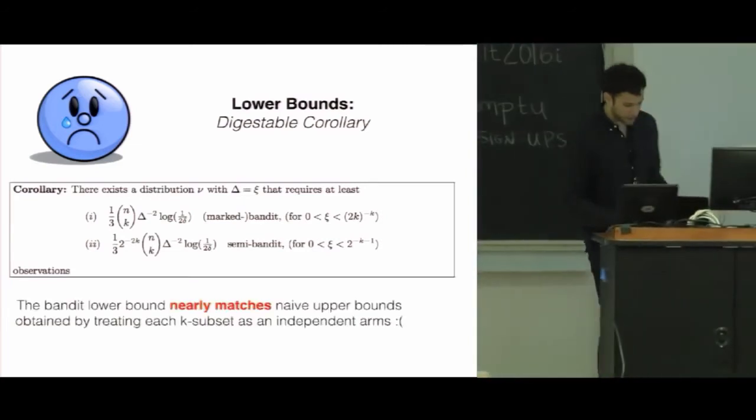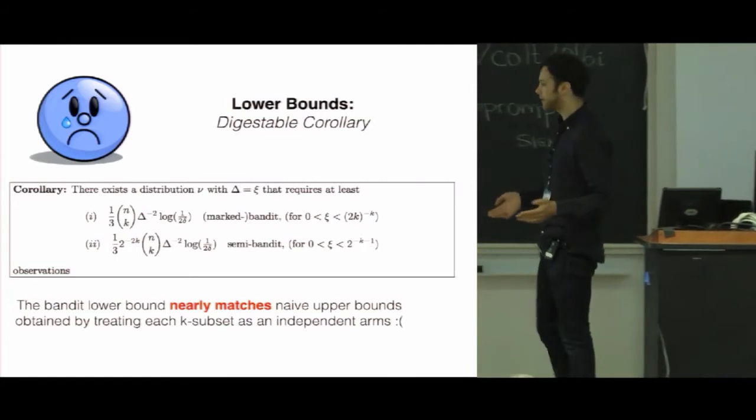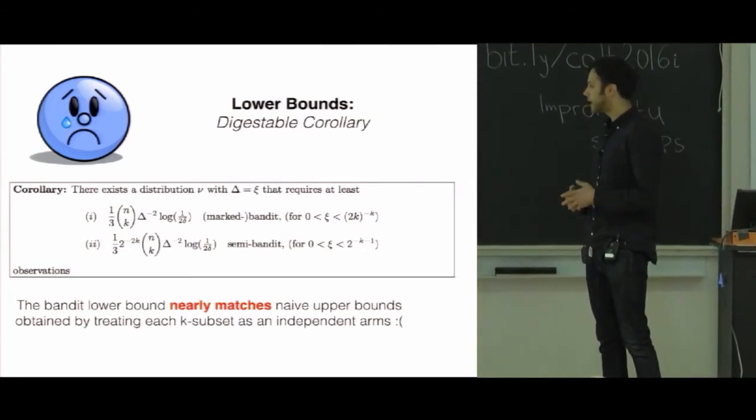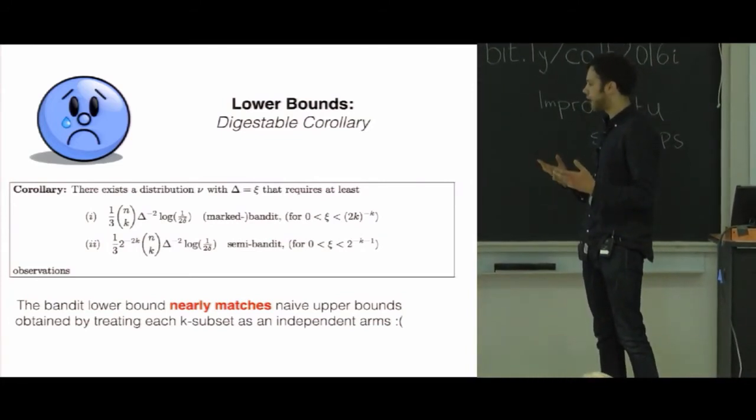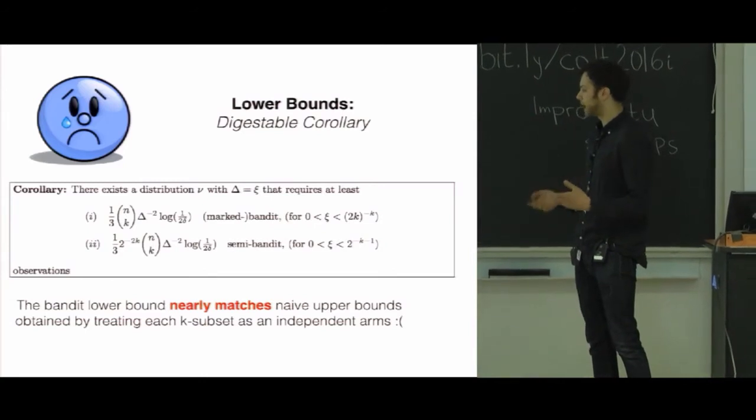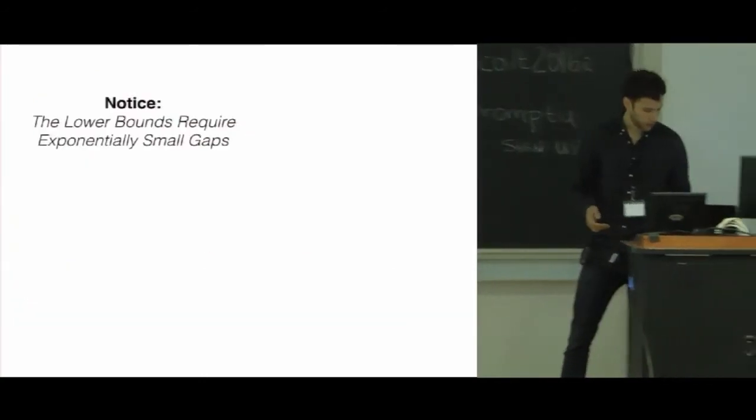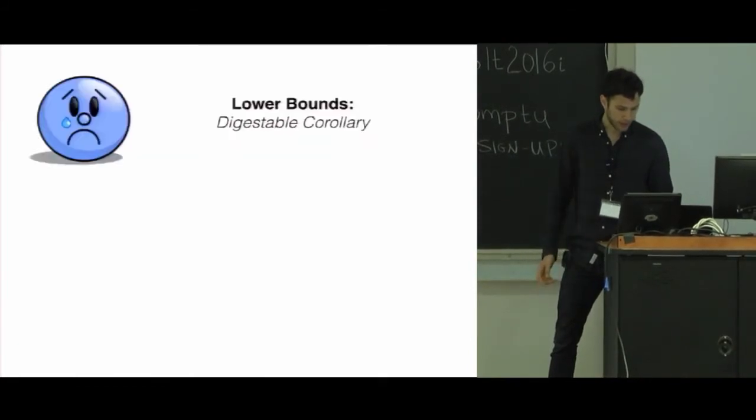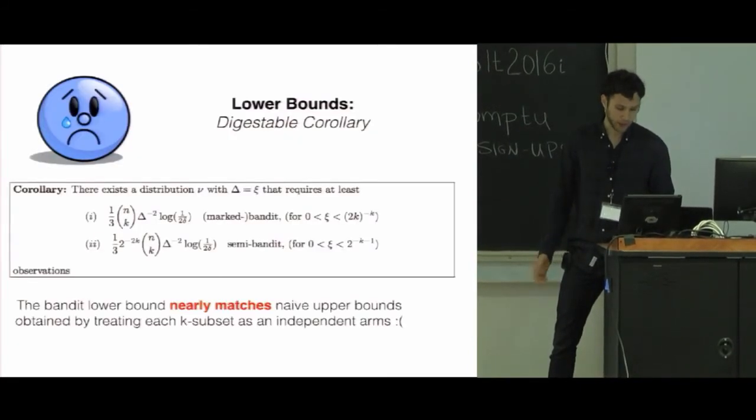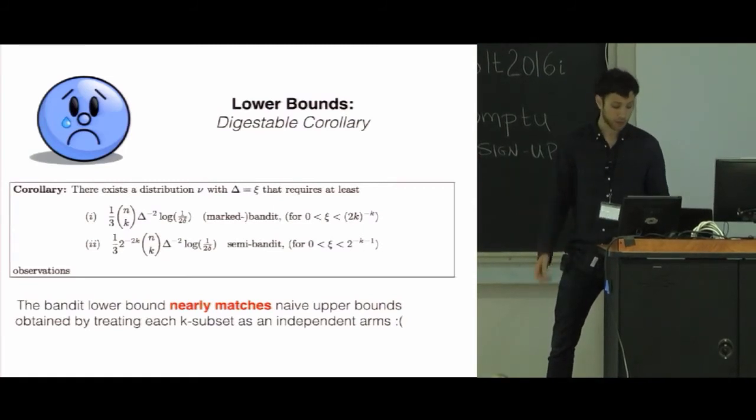And why is this depressing? It shows that actually even if you have access to unlimited computation, even if this would match naive upper bounds that you would obtain by treating each k subset as an independent subset of arms. And also, this would also translate into regret bounds. So the worst case regret bounds that you would see if there was no structure in the problem.